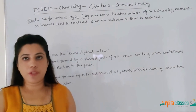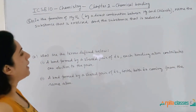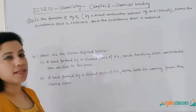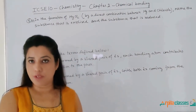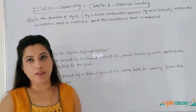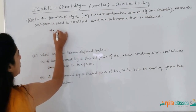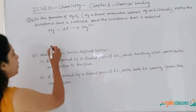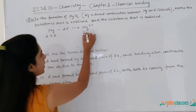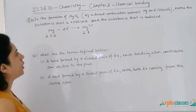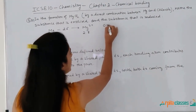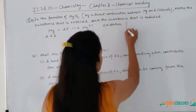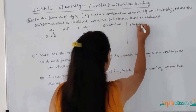The fifth question: in the formation of magnesium chloride by ionic combination between magnesium and chloride, name the substance that is oxidized and the substance that is reduced. We know that loss of electrons is oxidation and gain of electrons is reduction. Magnesium will lose two electrons to convert into Mg²⁺ — its configuration changes from 2, 8, 2 to 2, 8. This loss of electrons is oxidation, so magnesium is oxidized.